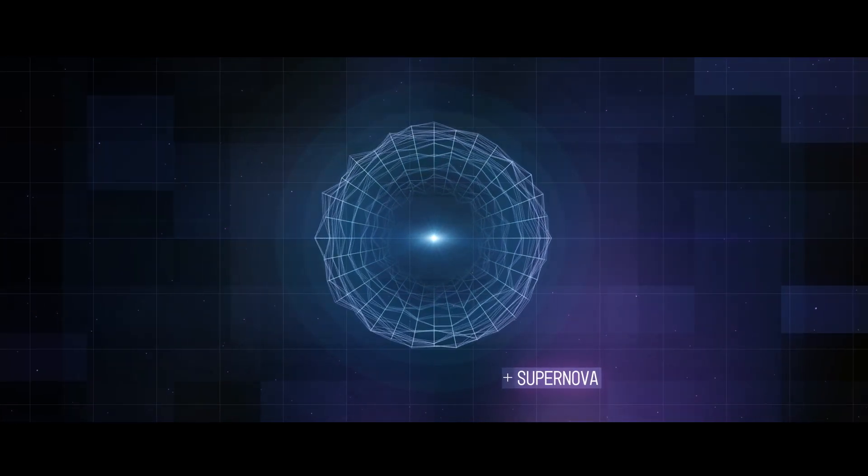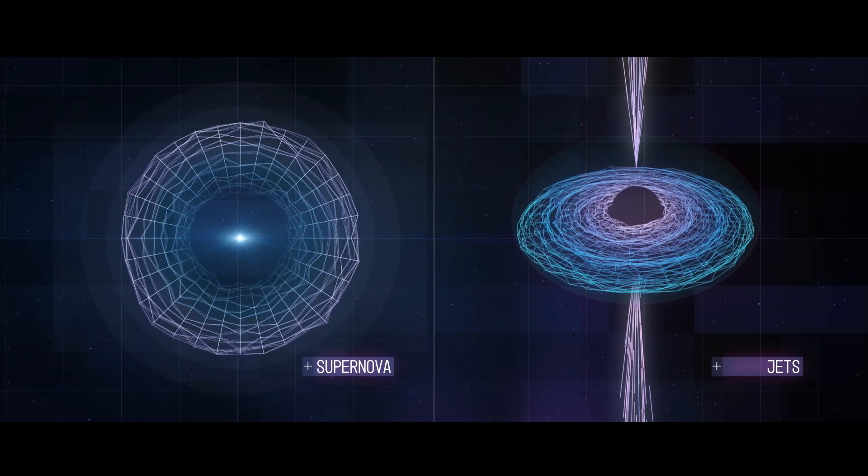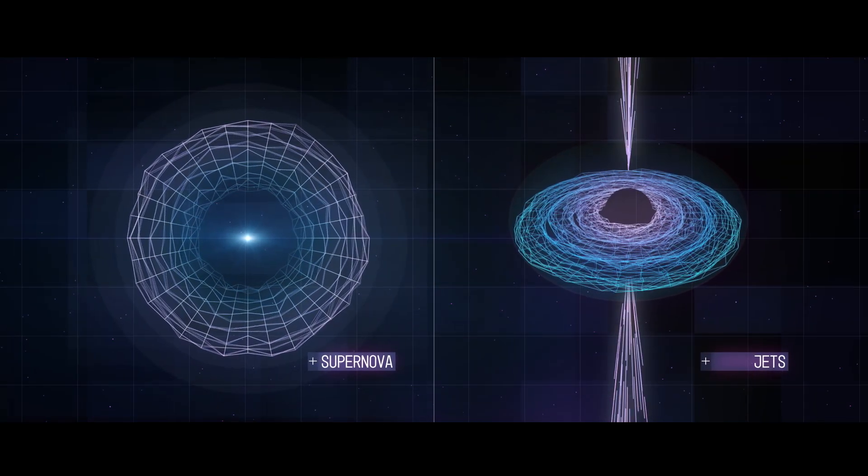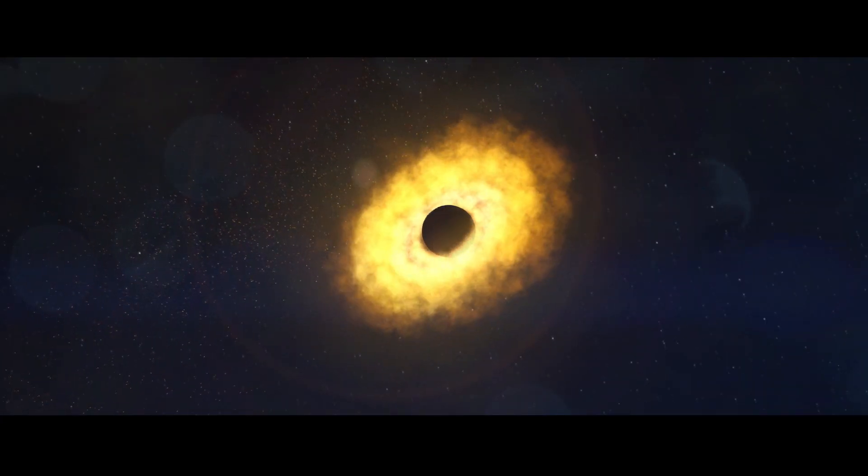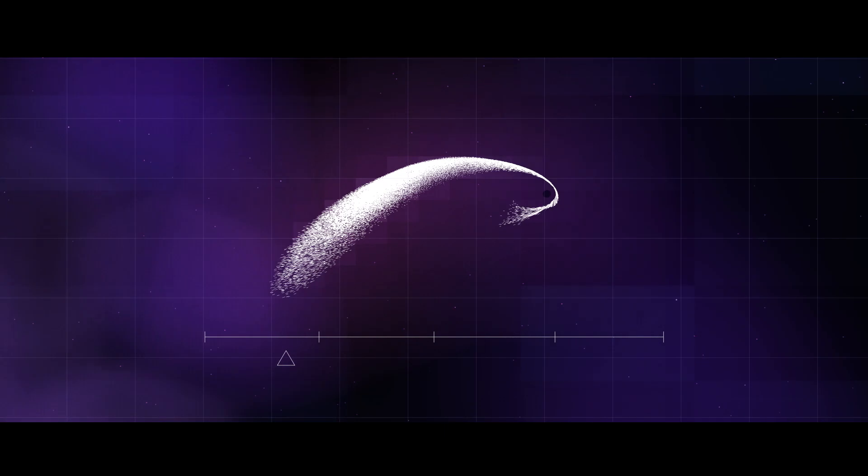High-energy neutrinos come from even more bizarre places, like super-fast particle jets driven by supermassive black holes. Scientists suspected that tidal disruptions could also produce high-energy neutrinos, but they weren't sure where or when in the process the particles might appear.